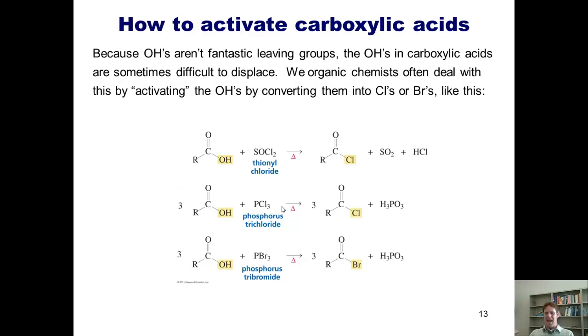Now I want to teach you how to activate carboxylic acids. As we've discussed earlier in this chapter, OHs aren't the best leaving groups. Is there a way, then, to convert an OH into a more reactive leaving group? The answer is yes. We've mentioned this before, but you can take a carboxylic acid and convert the OH into a Cl by treating it with thionyl chloride, which I affectionately refer to as SOCl2. You can also make the same conversion by treating your carboxylic acid with phosphorus trichloride, or you can convert the carboxylic acid into an acid bromide by treating it with phosphorus tribromide.